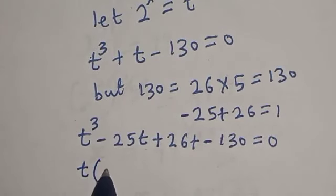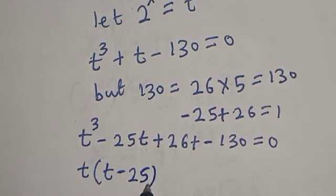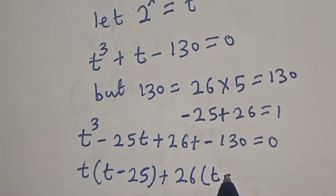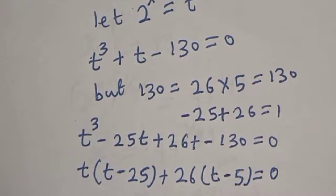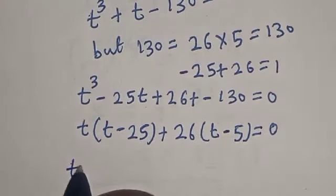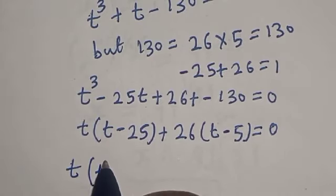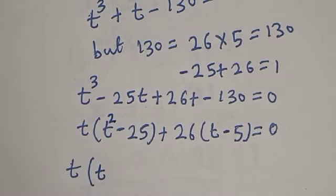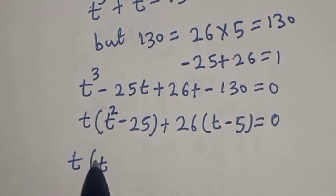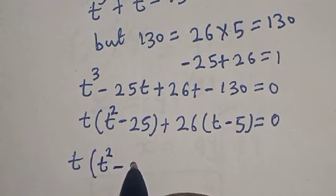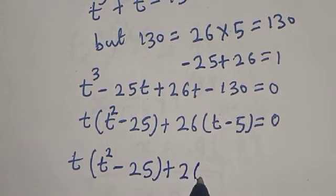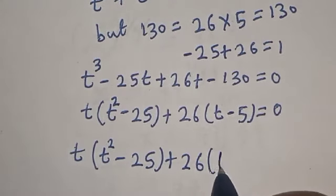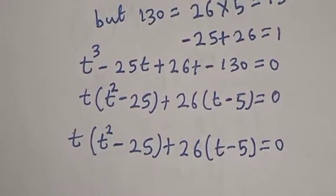Factoring, we get t bracket t minus 25 plus 26 bracket t minus 5 is equal to 0. Then, correcting, we have t bracket t squared minus 25 plus 26 bracket t minus 5 is equal to 0.